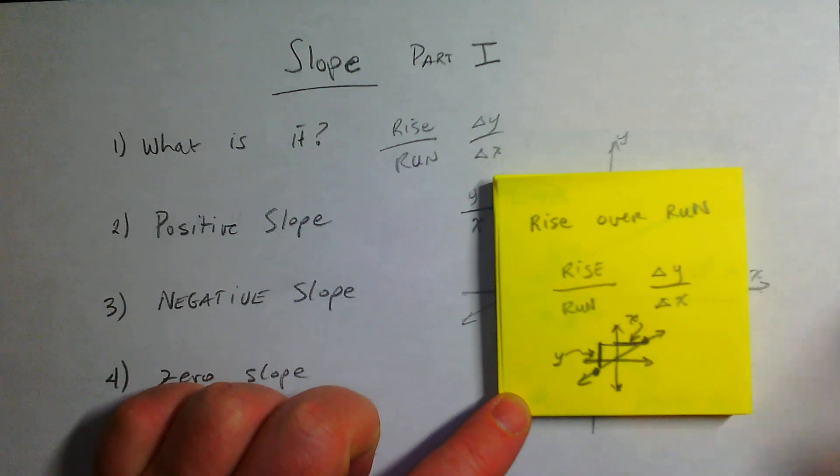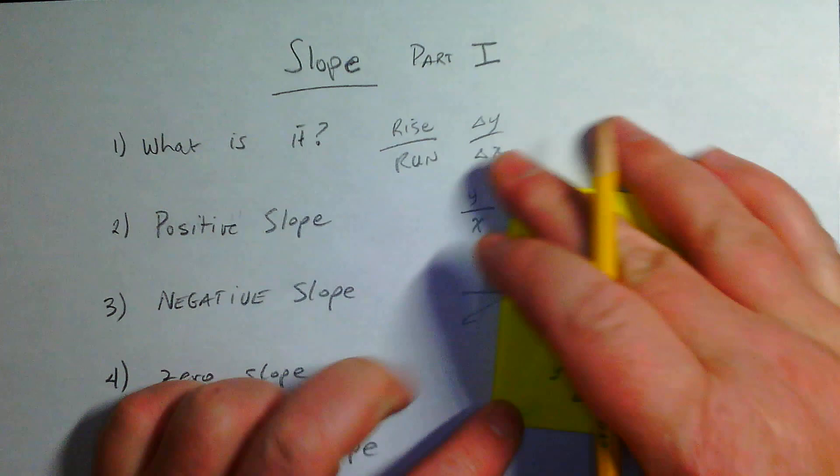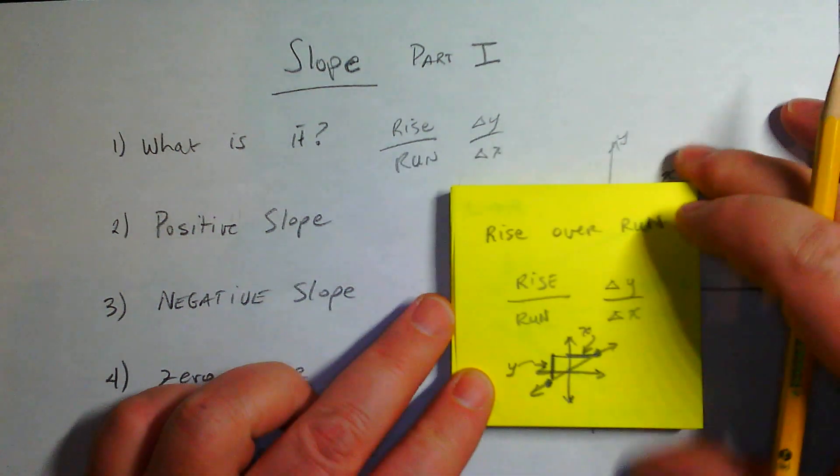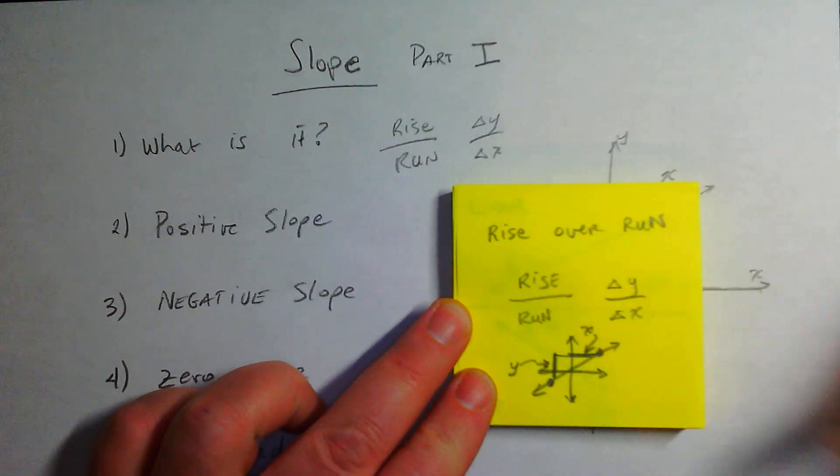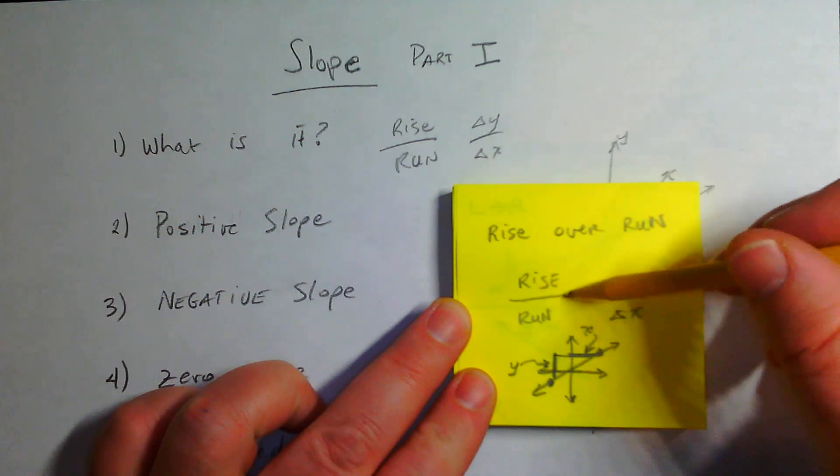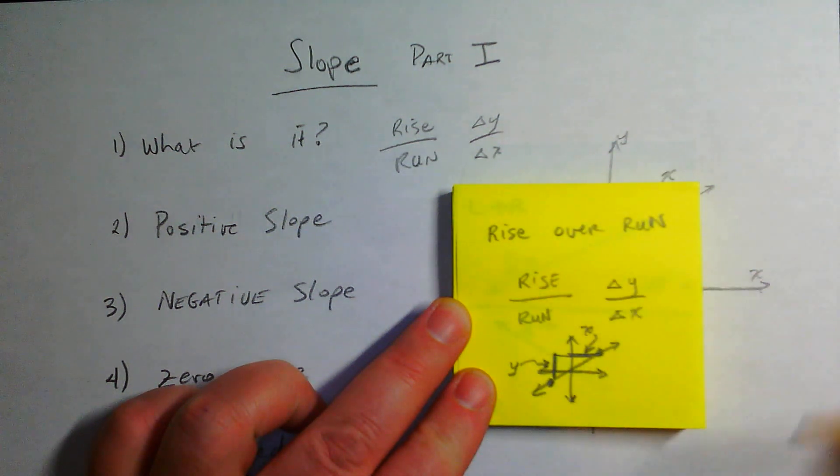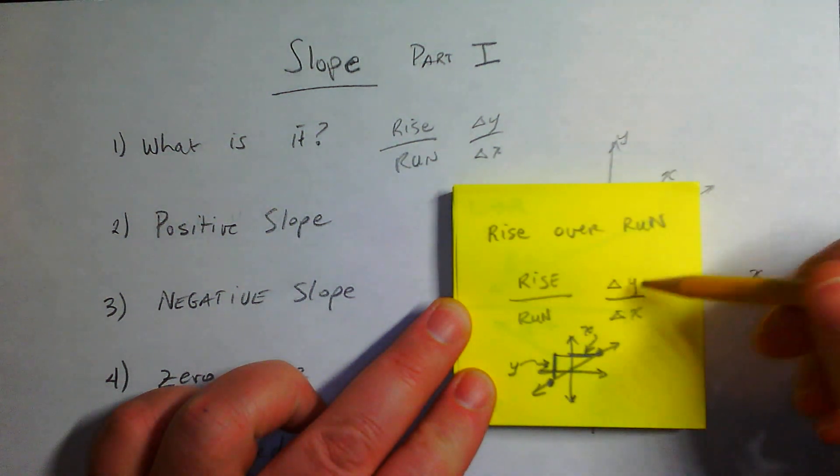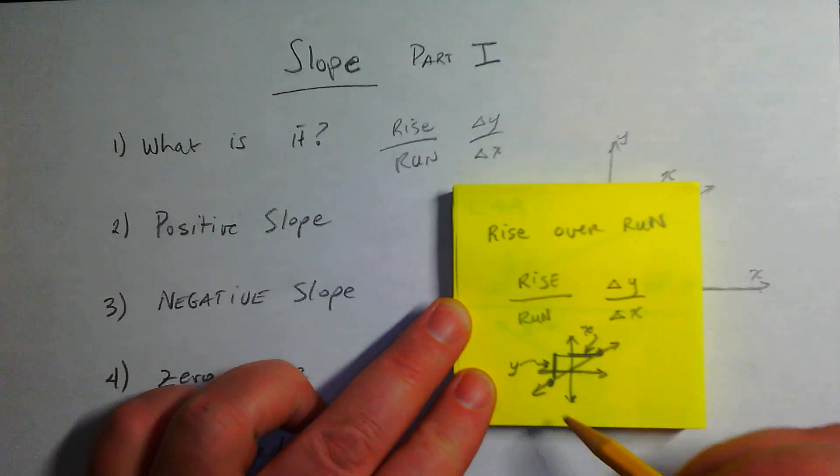Let's talk about slope and what an algebra student needs to know. The most basic thing is that slope is rise over run. Literally, physically speaking, rise on top, run on the bottom. It's change of y over change of x.